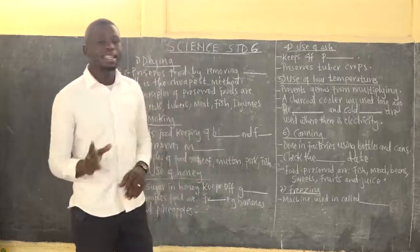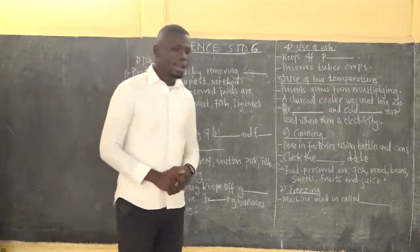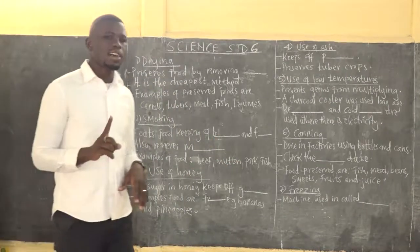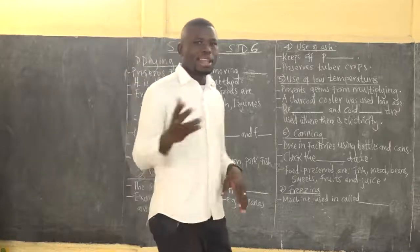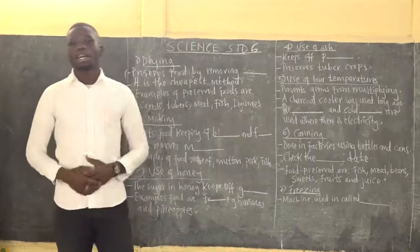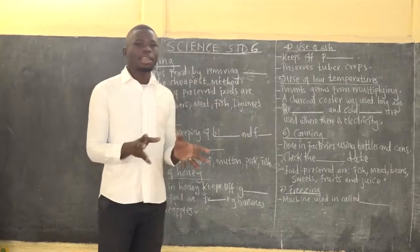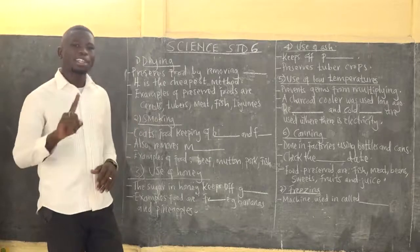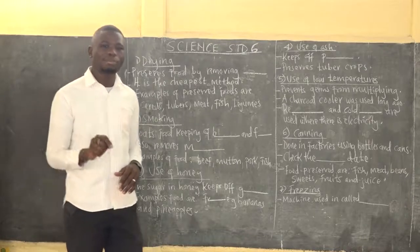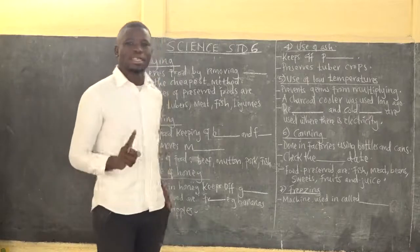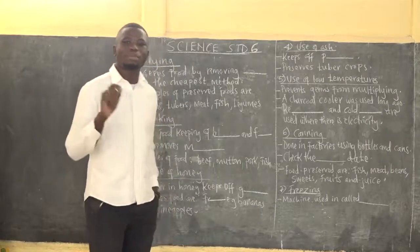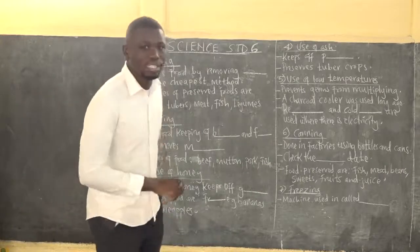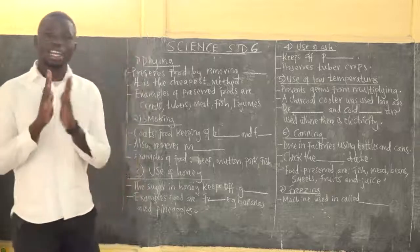Canning is done in factories where food is preserved in bottles or cans — for example yogurt, juice, and soda are canned. When buying canned food from a supermarket or shop, always check the expiry date. If you do not check the expiry date, you might consume food that has already gone bad, causing food poisoning or infections.